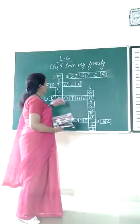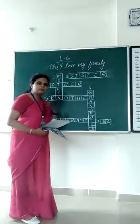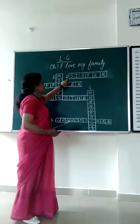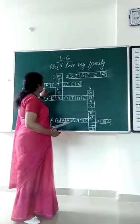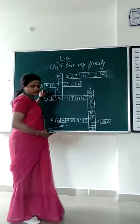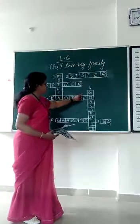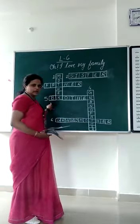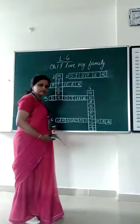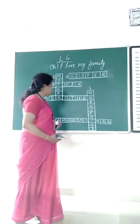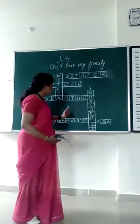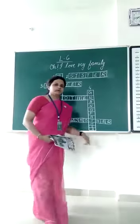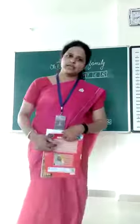So these are the members of our family. Number one is Mother, number two is Sister, number three is Father, number four is Grandfather, number five is Brother, and number six is Grandmother. Thank you.